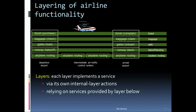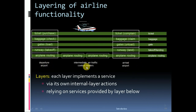Layering of airline functionality: purchase ticket, baggage check, gate, slot, runway takeoff, airplane routing, runway land, gate, unload, baggage claim, ticket complaint. This shows the departure and arrival process. Each layer implements a service via its own internal layer actions, relying on services provided by the layer below.